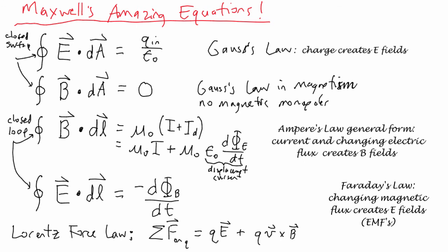With this law, we have completed the description of everything that is known about electricity and magnetism. Gauss's law describes how charge creates electric fields. Gauss's law on magnetism just describes how there are no magnetic monopoles. The magnetic flux through a closed surface must be zero.